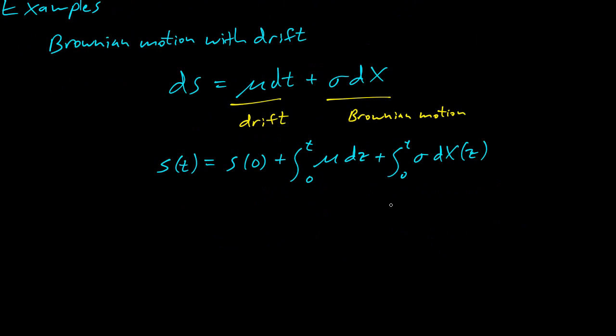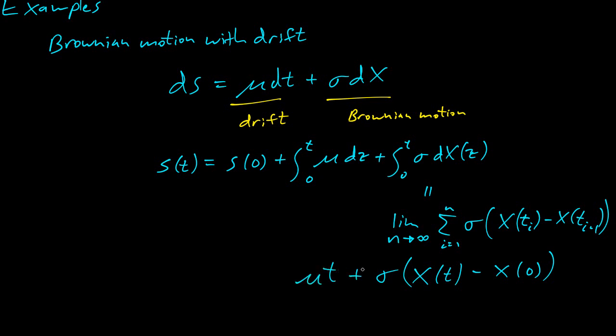There's a definition for here. This one is equal to the limit as n goes to infinity of the sum from i equals 1 to n of the function times the difference of the x's. What is the limit as n goes to infinity? This limit will be x(t) minus x(0) times σ. Here, what's this integral? Integral of μ is just μ times t, and then we have the constant term.